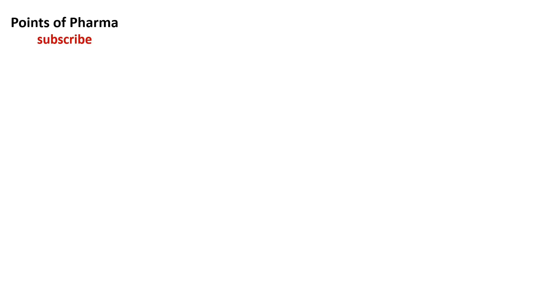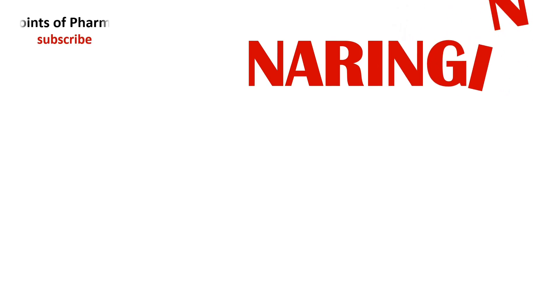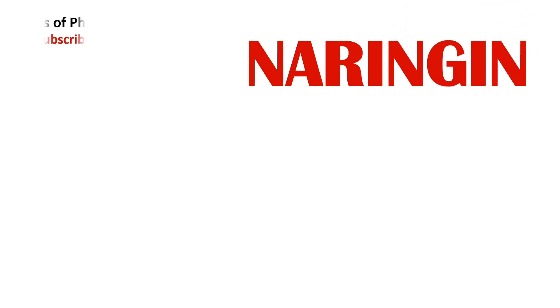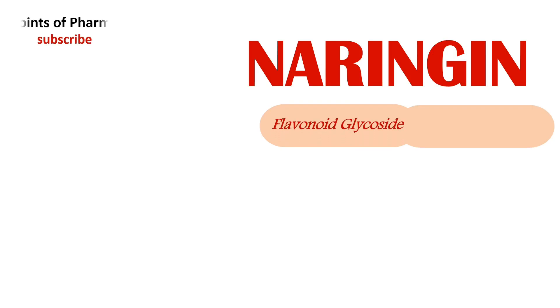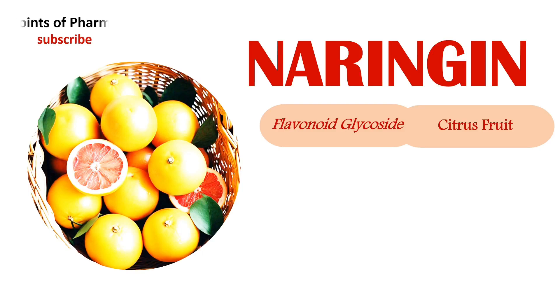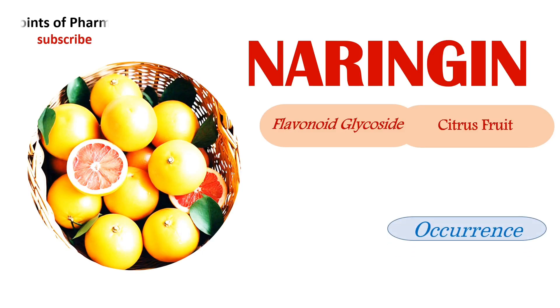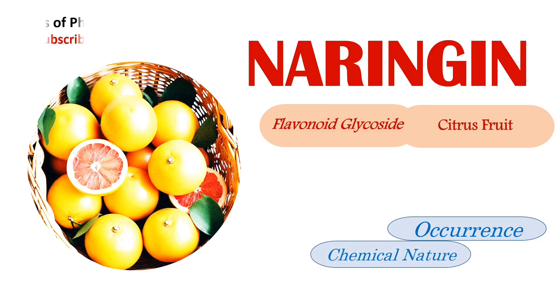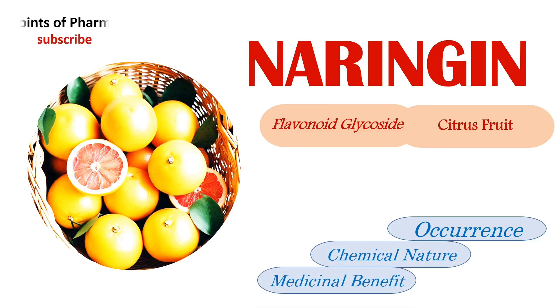Welcome to Points of Pharma. Today the topic is Naringenin. Naringenin is a flavonoid glycoside found in citrus fruit. Today we will know about the occurrence of Naringenin and also discuss its chemical nature and medicinal benefits.